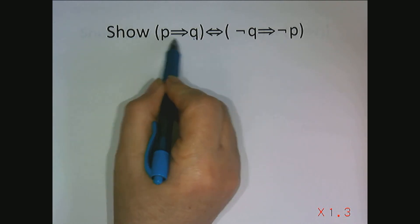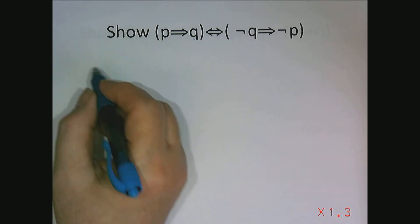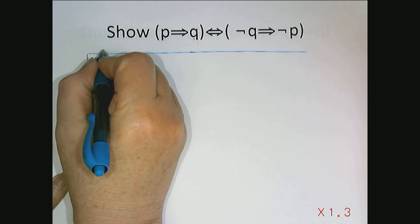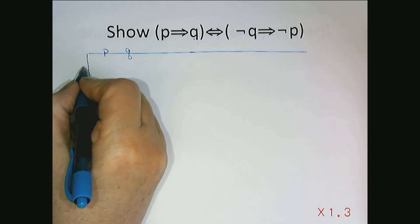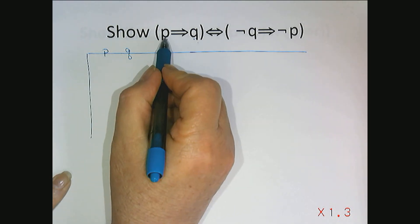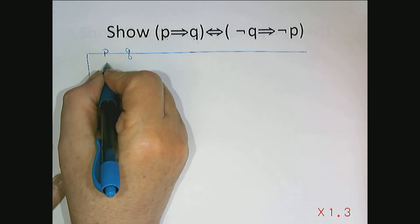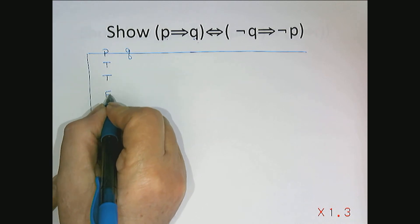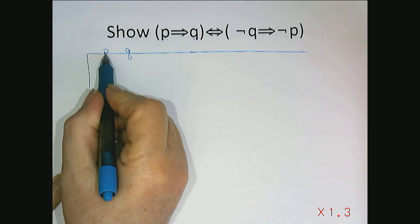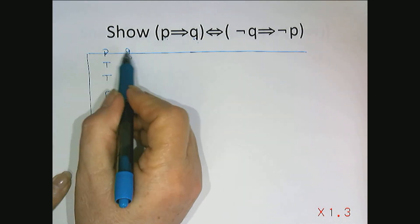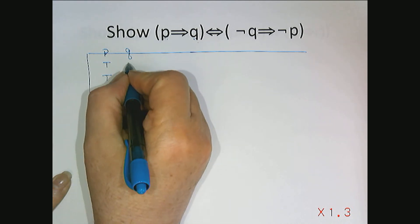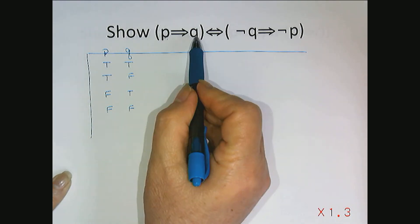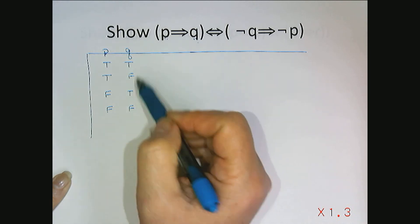So there are four possible combinations of trues and falses for p and q. I'm going to create a truth table with four rows, and these rows are going to indicate all of the different combinations for the truth values of p and q. In general, there are going to be 2^n rows, where n is the number of basic components, in my truth table.